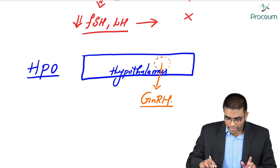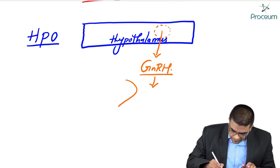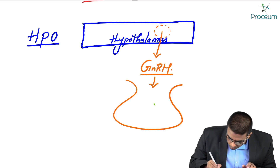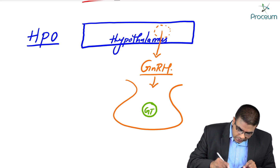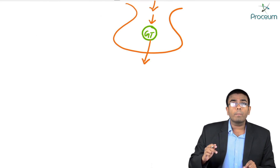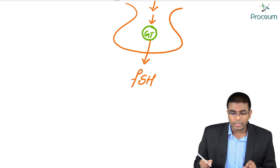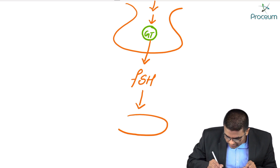This gonadotropin releasing hormone reaches the anterior pituitary. In the anterior pituitary, GnRH acts on gonadotropes. Whenever gonadotropes are acted upon by GnRH, they produce the gonadotropic hormones — most importantly, follicle stimulating hormone. This FSH then acts on the gonads, which in this case are the ovaries.